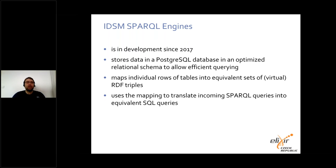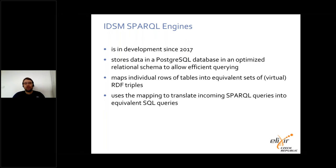In our approach, data are stored in a PostgreSQL database in an optimized relational schema that allows efficient querying. To represent this stored data in RDF, we define mappings describing the conversion of individual table rows into an equivalent set of RDF triples. Importantly, these RDF triples are never explicitly materialized.